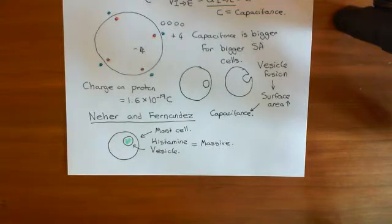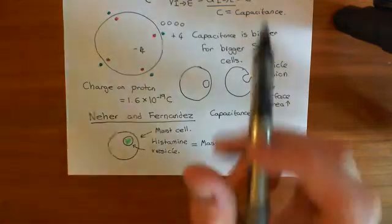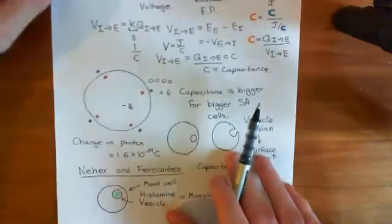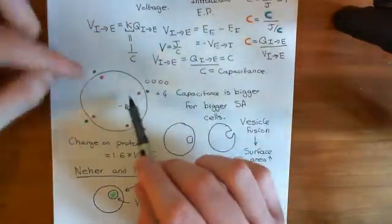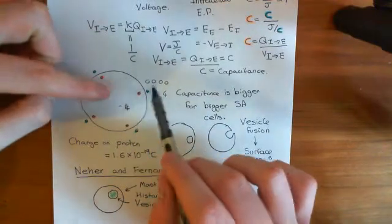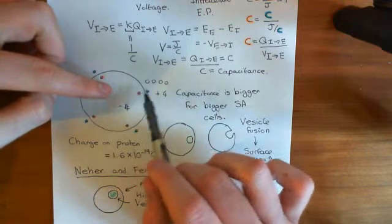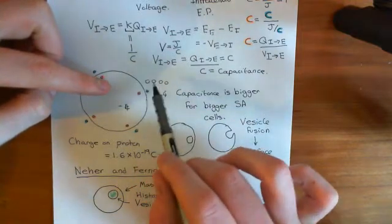So in the first two videos, we've had a discussion of what the capacitance across a cell membrane means. Basically, we've seen how it's this constant that relates the charge that you move from the intracellular to the extracellular compartment to the actual electrical potential difference that you get across that membrane.